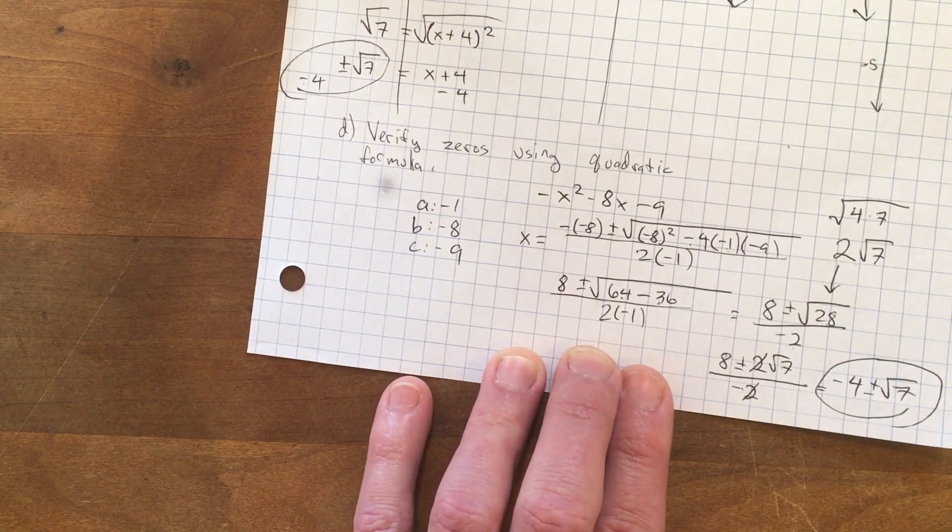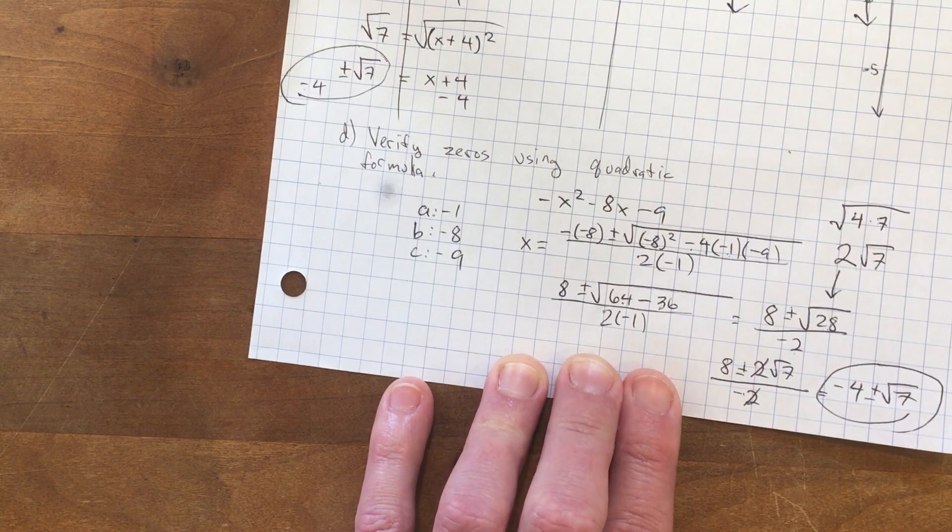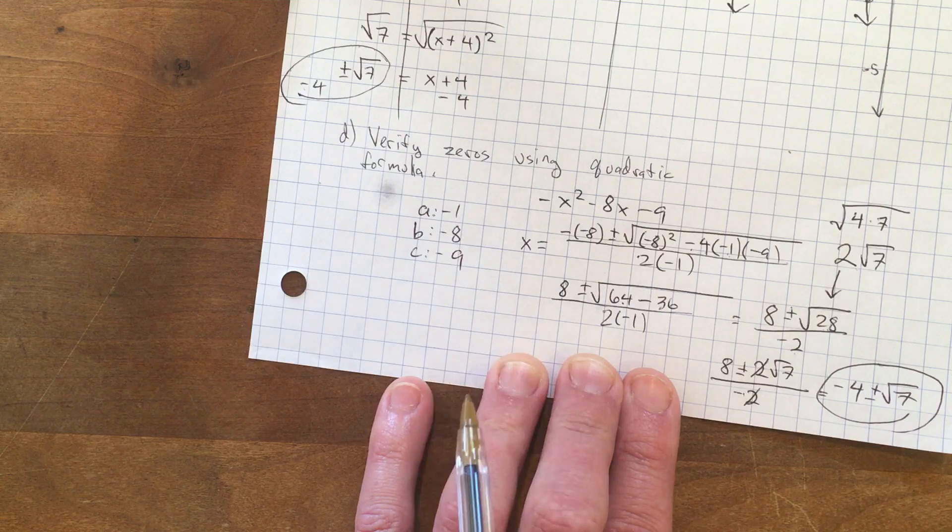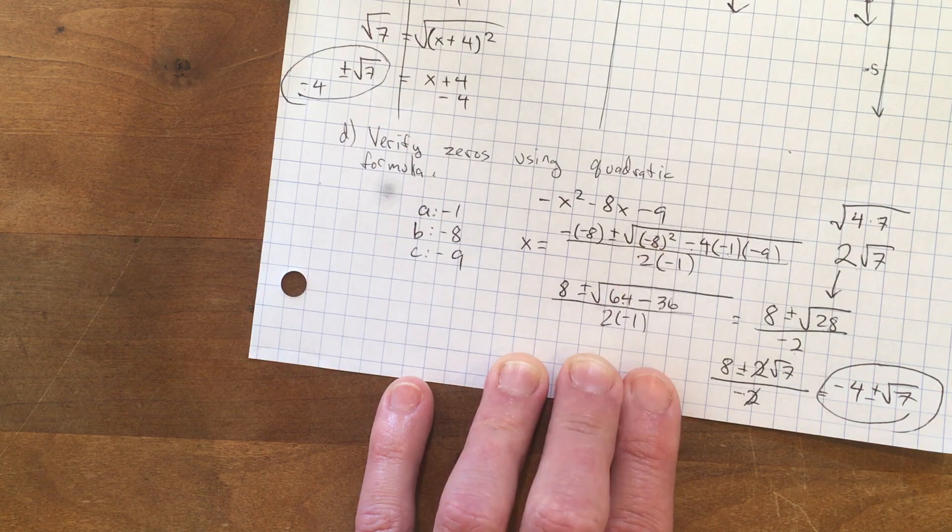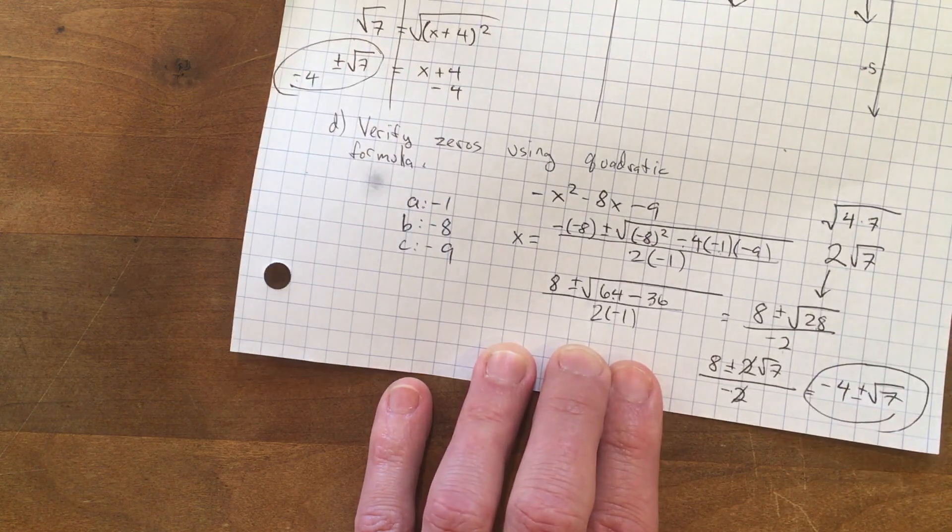It's up to you to be able to do it both ways - completing the square or using the quadratic formula - and then maybe decide which one you like better.